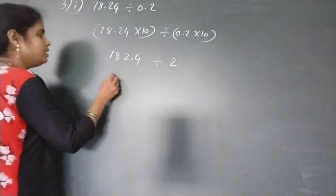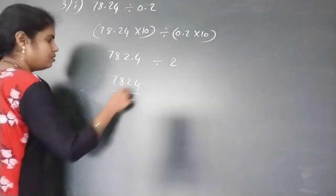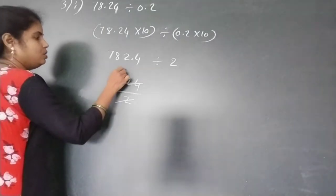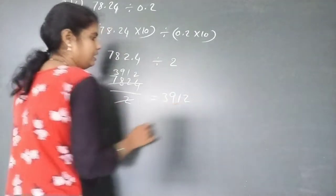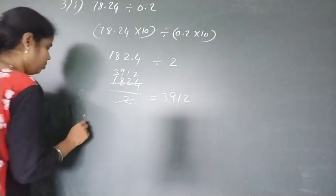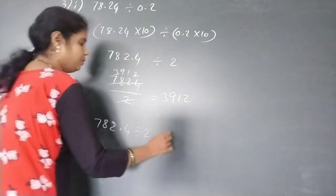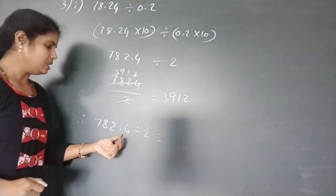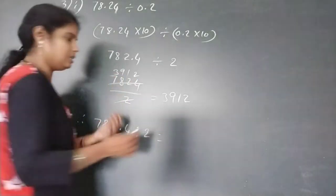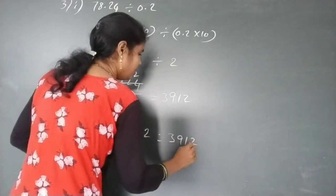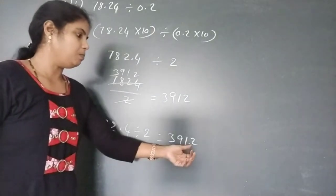How can you do this? First remove the decimal point and do the division: 7, 8, 2, 4 divided by 2. Working through the division gives 3912. So 782.4 divided by 2 equals 3912. In the dividend, the decimal point is 1 digit in, so you keep 1 decimal in the quotient. Therefore the answer is 391.2.